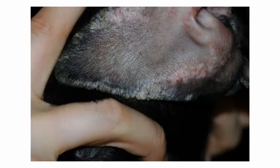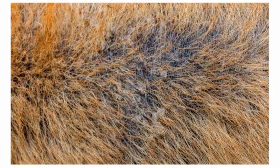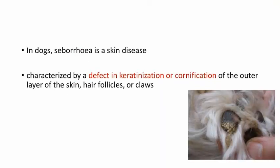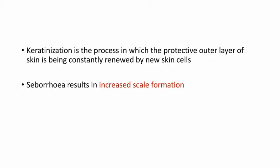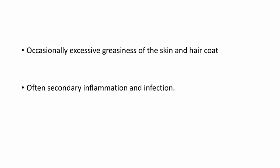Next coming to seborrhea. Let's see the picture of seborrhea in the ear of a dog — you can see the ear margins, the color change, and the texture change of the skin. In dogs, seborrhea is a skin disease characterized by defective keratinization or cornification of the outer layer of skin, hair follicle, or claws. Keratinization is the process in which the protective outer layer of skin is constantly renewed. Seborrhea results in increased scale formation and occasionally excessive greasiness of the skin and hair coat, leading to secondary inflammation and infection.